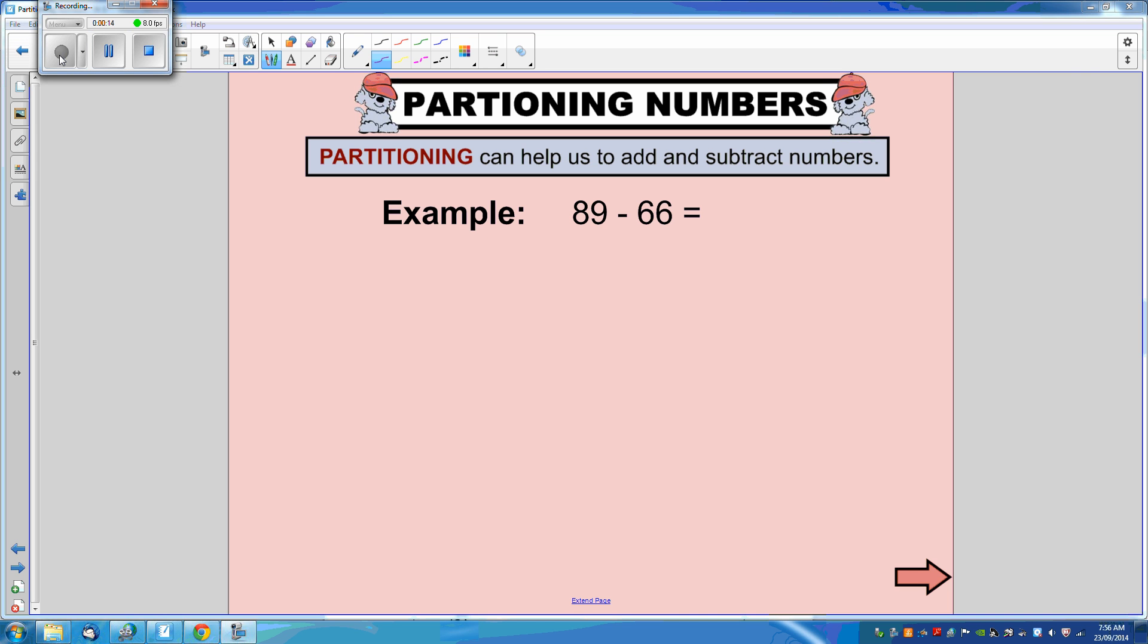The first step when we're subtracting numbers using partitioning is to write the equation vertically. So we're going to say 89 take away 66. Now we can do the partitioning.